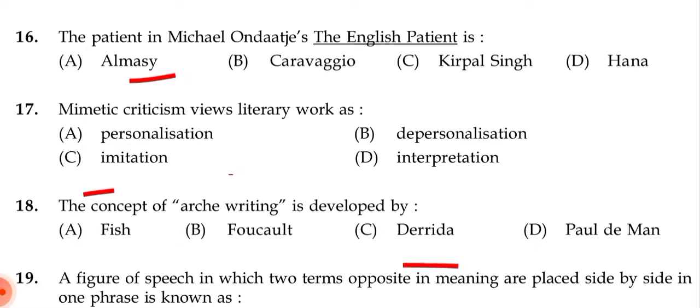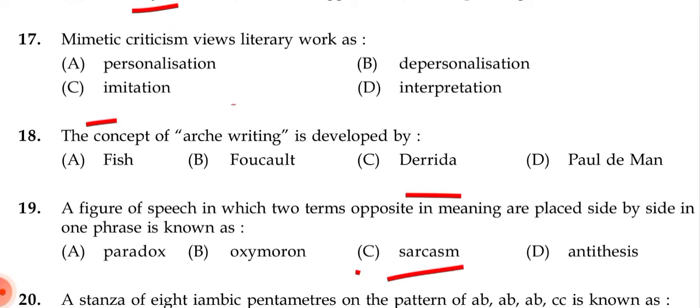Next question: Mimetic criticism views literary work as — (a) personalization, (b) depersonalization, (c) imitation, (d) interpretation. The correct answer is (c) imitation.